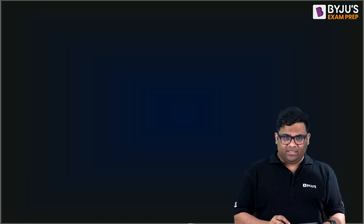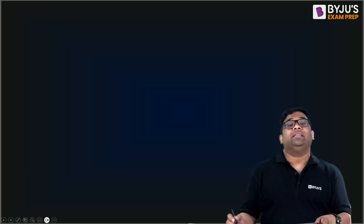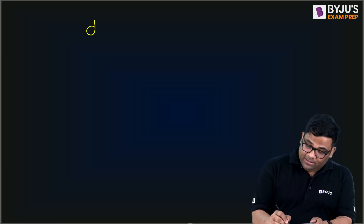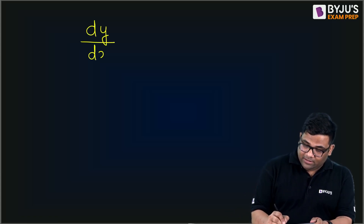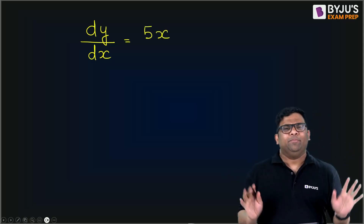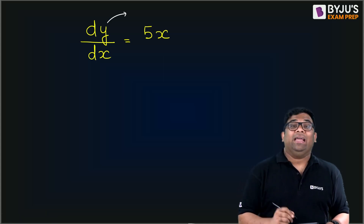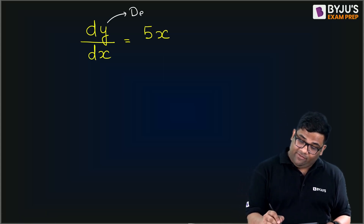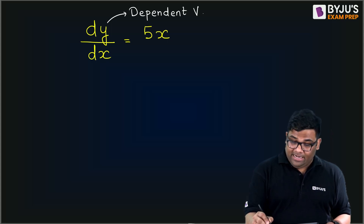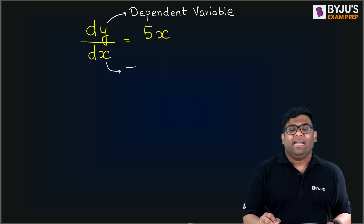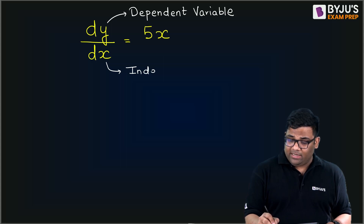If I see any differential equation, a very basic one — suppose I write dy by dx is equal to 5x. It is a very simple differential equation. Here, y is known as the dependent variable, and x is the independent variable.